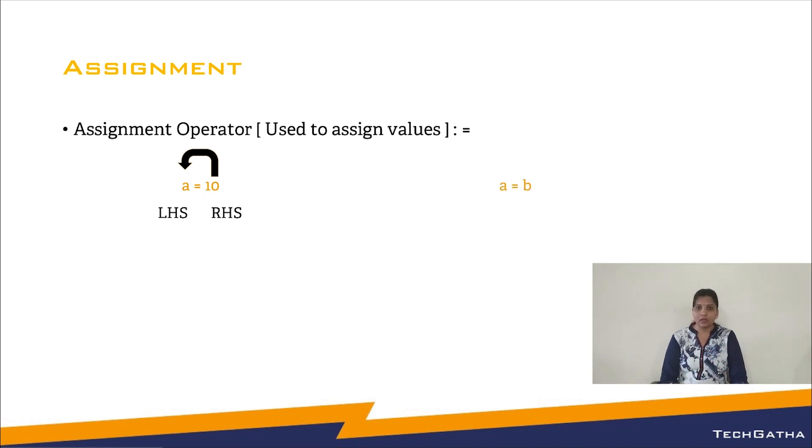Assume an example we have a equal to b. a is a variable, b is a variable, but remember this is very important that values always go from right hand side to left hand side, means value of b is being assigned or stored in the variable a.